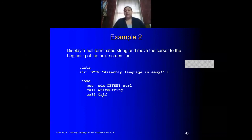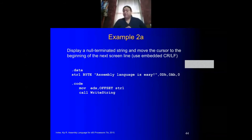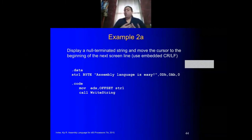If you're looking at your book, you have the list of every single one of the procedures in the Irvine32 library, as well as the explanation of the requirements and which registers each procedure uses, so that you know what registers you're supposed to set up before you call them.